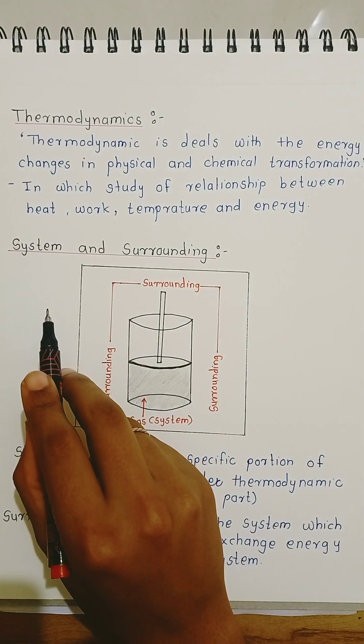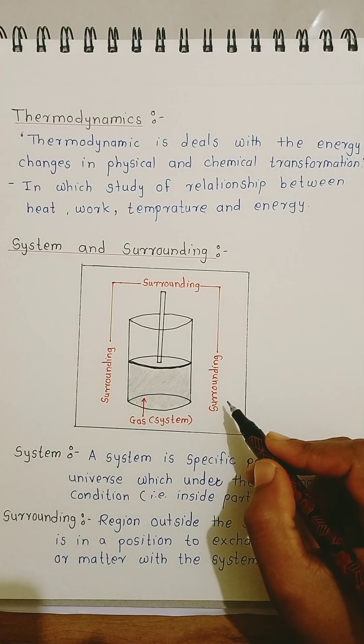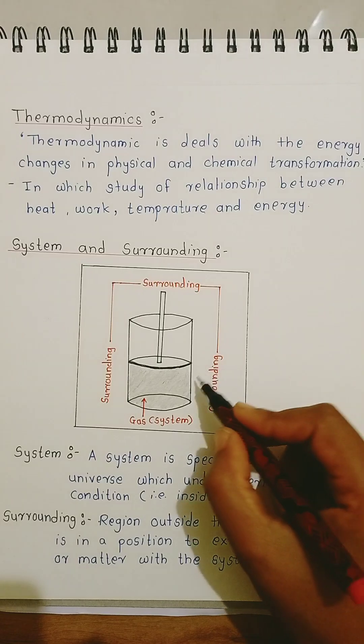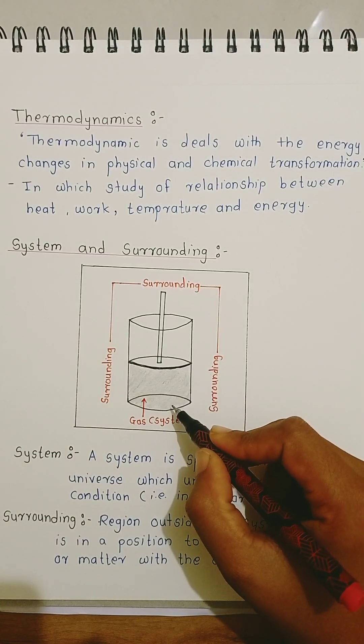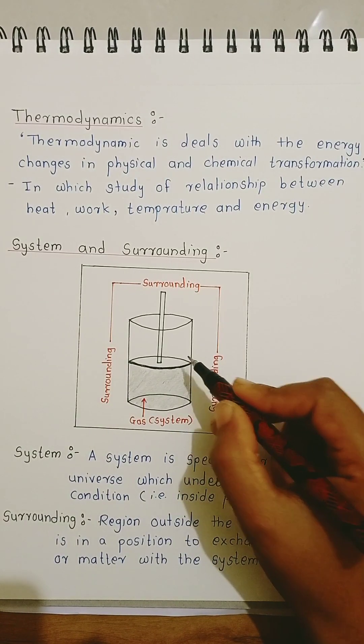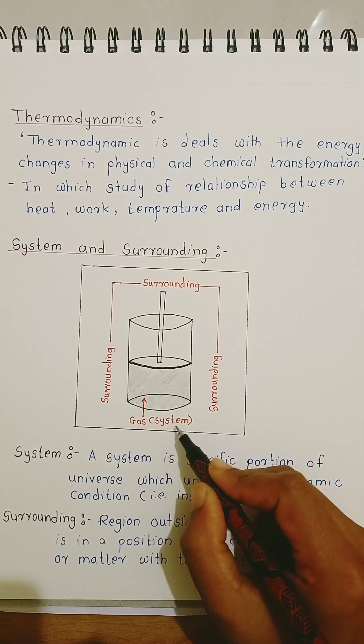What is meant by the system and surrounding? This diagram shows a system and surrounding. This is a cylinder filled with a gas and a movable piston. The inside part, that is the gas, is called the system.